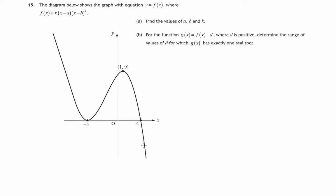So here we're given a cubic graph, cubic function f of x. We're told that it's of this form. Now that's in factorised form. We're asked to find what the values of k, a and b are.